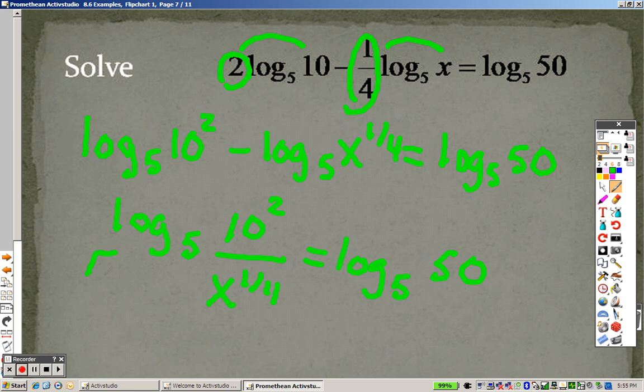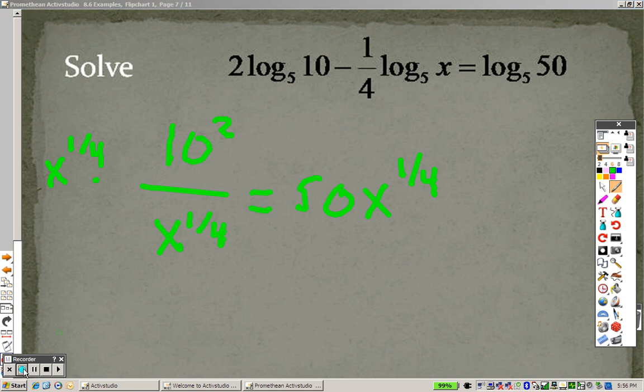Okay, I take each of these to the fifth power, because the base of the log is 5. They cancel out. So really, I have 10 squared over x to the 1 fourth equals 50. So I would multiply both sides by x to the 1 fourth power. And when we multiply that on both sides, these are gone.